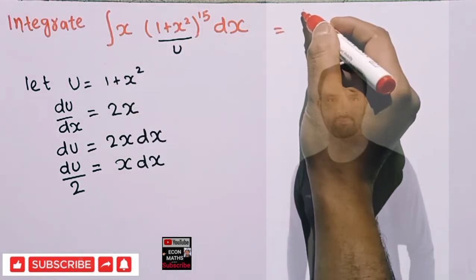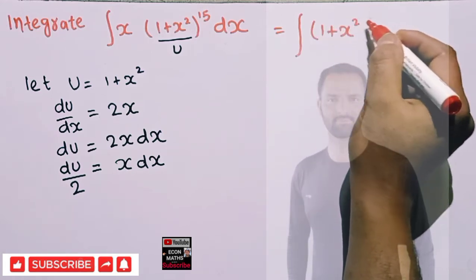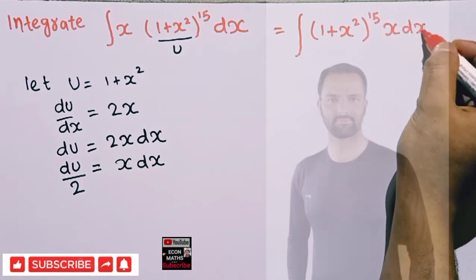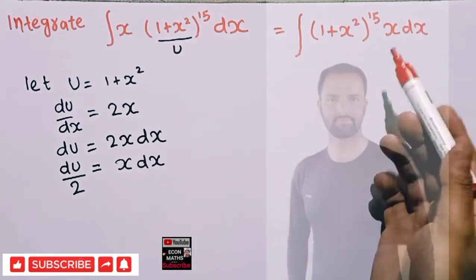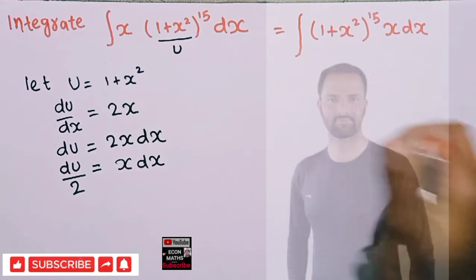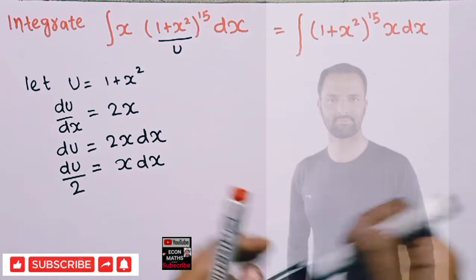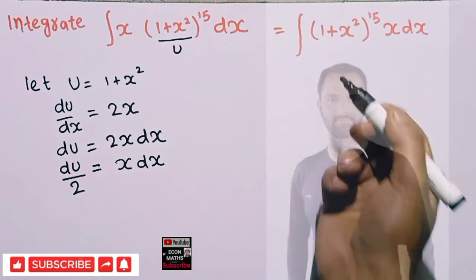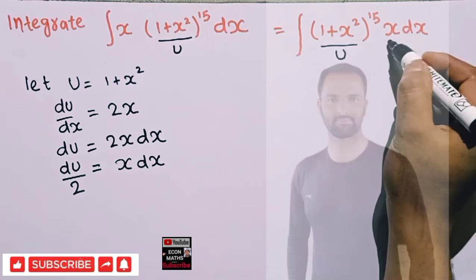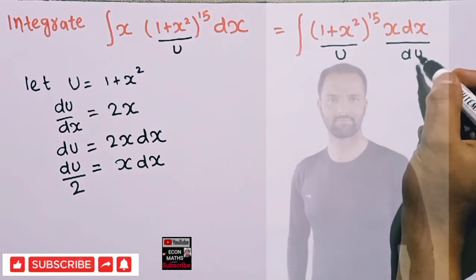Now let me rewrite the integral. We have the integral of (1 plus x squared) raised to the power 15 times x dx. I am just rearranging the terms — multiplication is commutative, so this holds. Since (1 plus x squared) equals u, this part becomes u, and in place of x dx we substitute du upon 2.